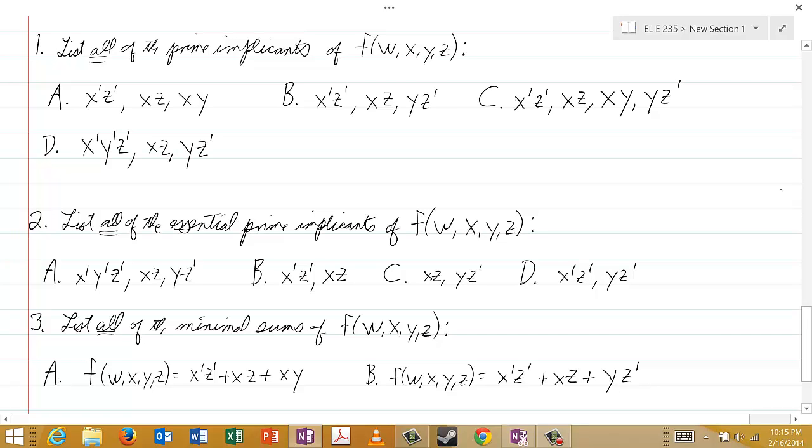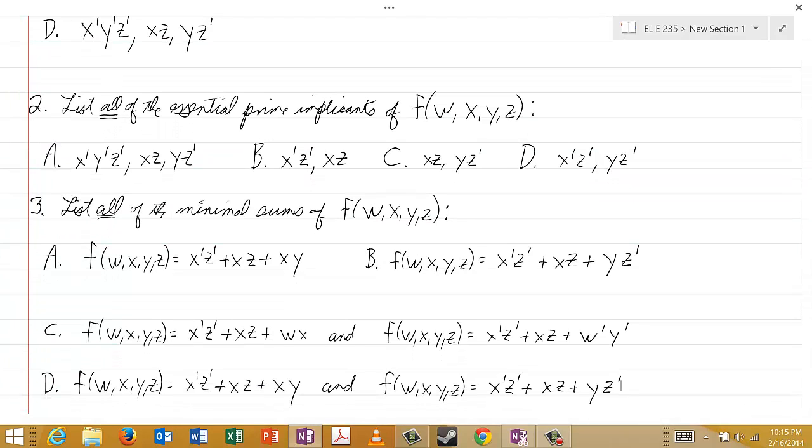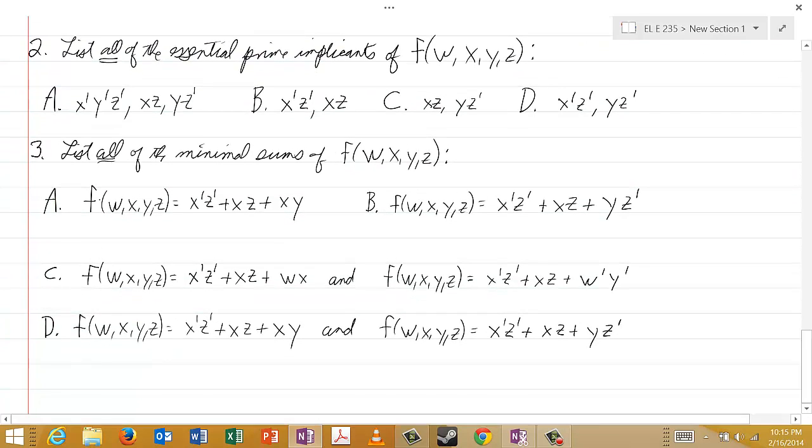And finally, in the third question, we want a list of all the minimal sums of this function. In choice A, there's only one minimal sum: x'z' or xz or xy. In B, there's only one minimal sum: x'z' or xz or yz'. In C, there are two minimal sums: x'z' or xz or wx, and x'z' or xz or w'y'. And in D, there's also two minimal sums: x'z' or xz or xy, and x'z' or xz or yz'.